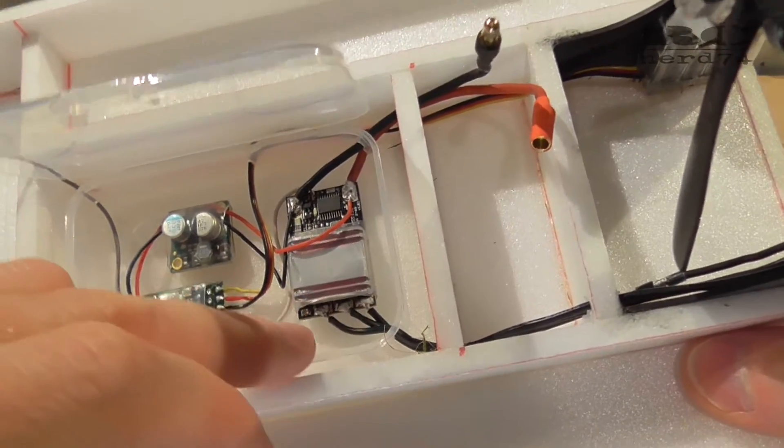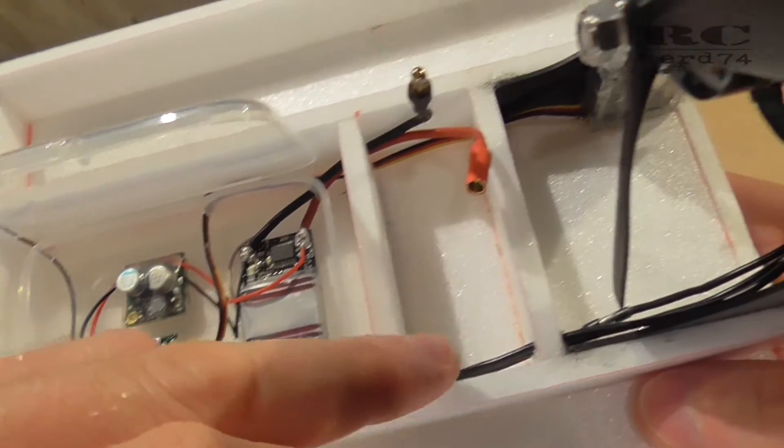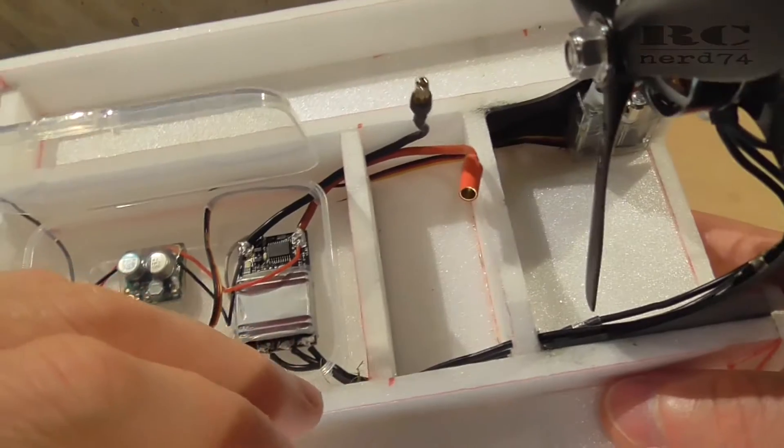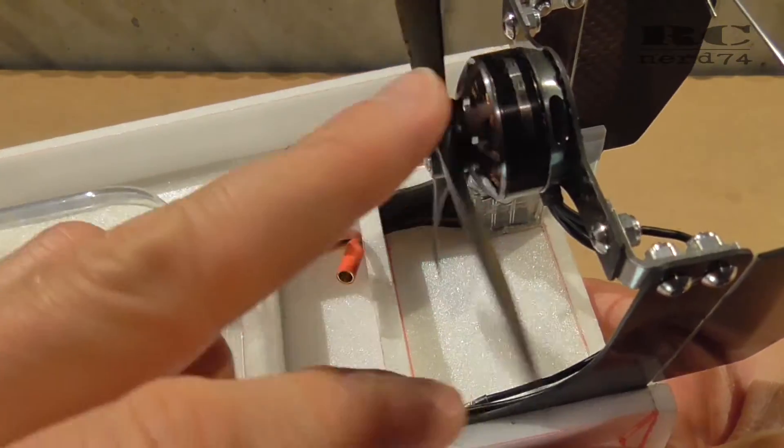We have the white cable which is the signal for the ESC and then we have the three cables for the motor which goes straight back to the Lumineeer drone motor.